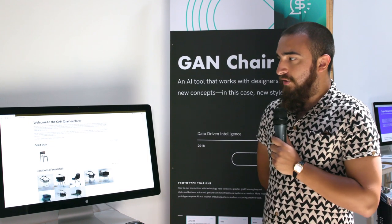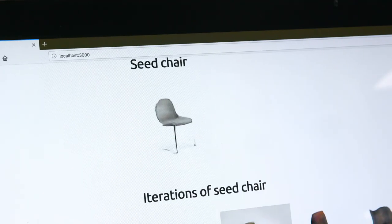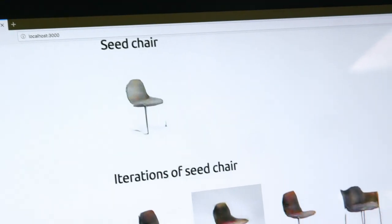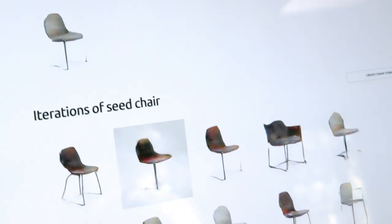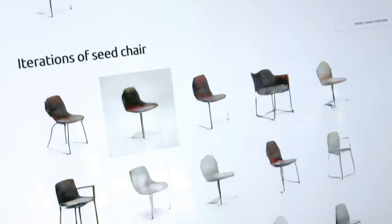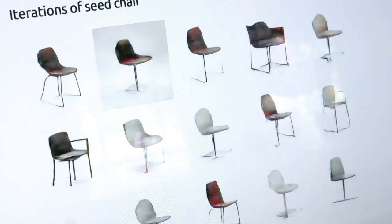This prototype is the GAN chair. This particular prototype is actually a machine learning model that is able to generate images of chairs.